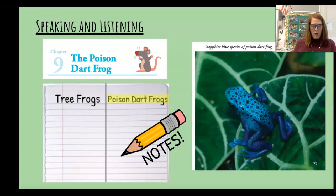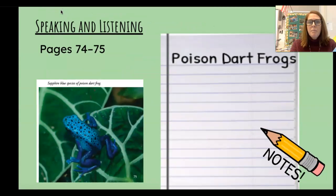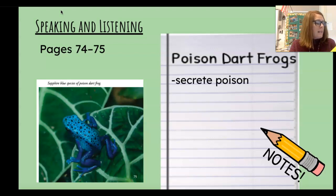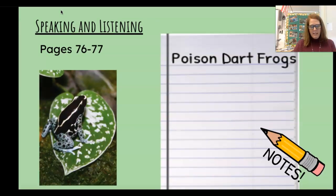So what are two things that we could write down? What do you think we're going to write down for our notes for poison dart frog? If you said secrete poison — which means the poison seeps out of its skin through its pores — and bright colors, those are the two most important things, the main ideas. Let's go on to pages 76 and 77. You're listening for two important facts, two big ideas.